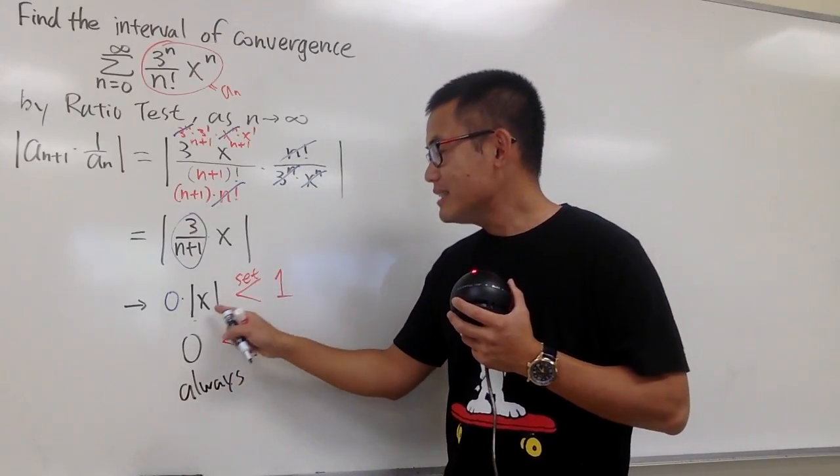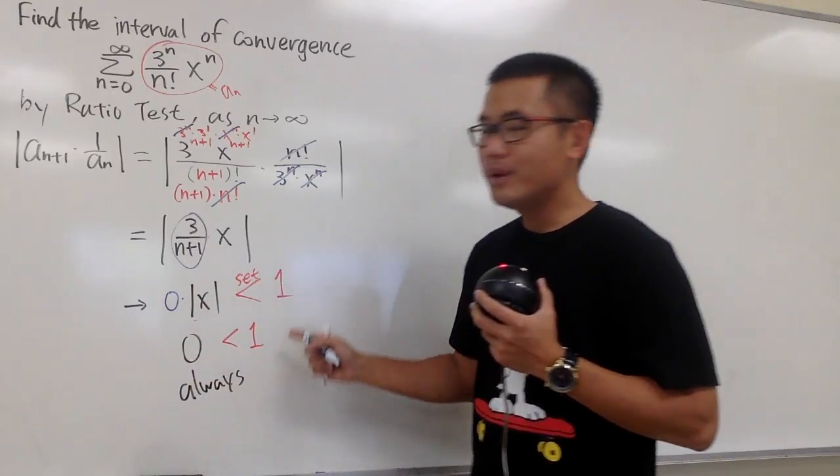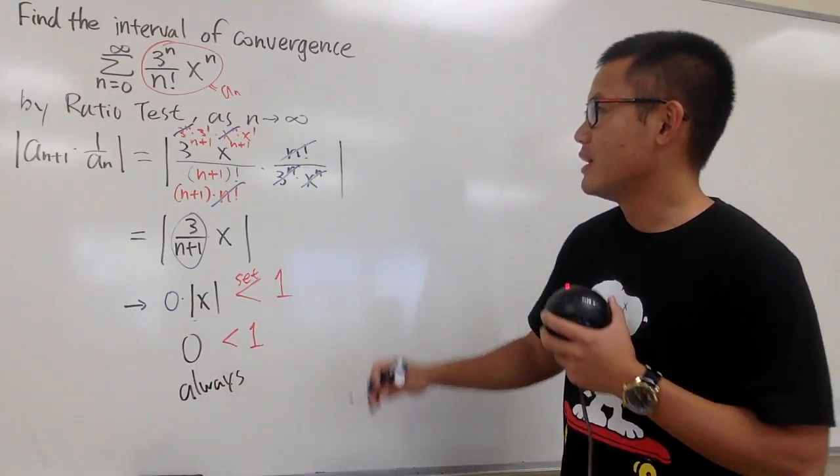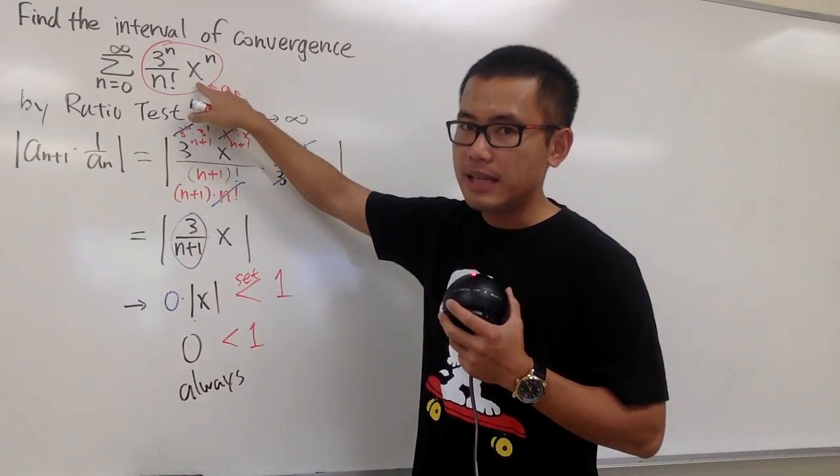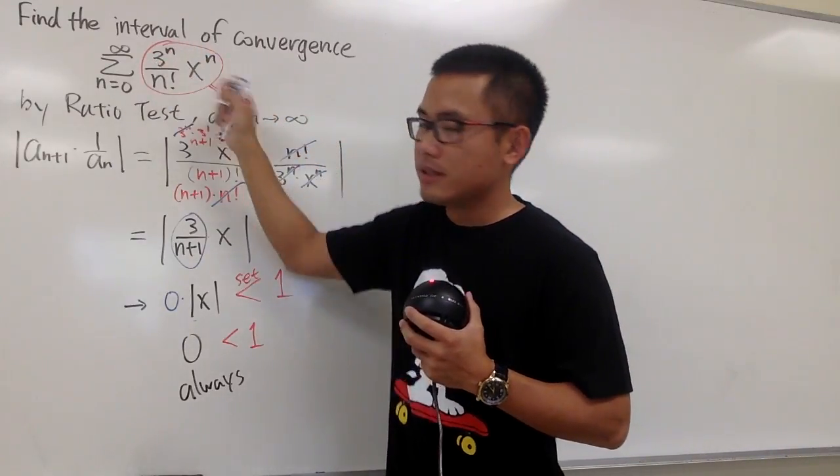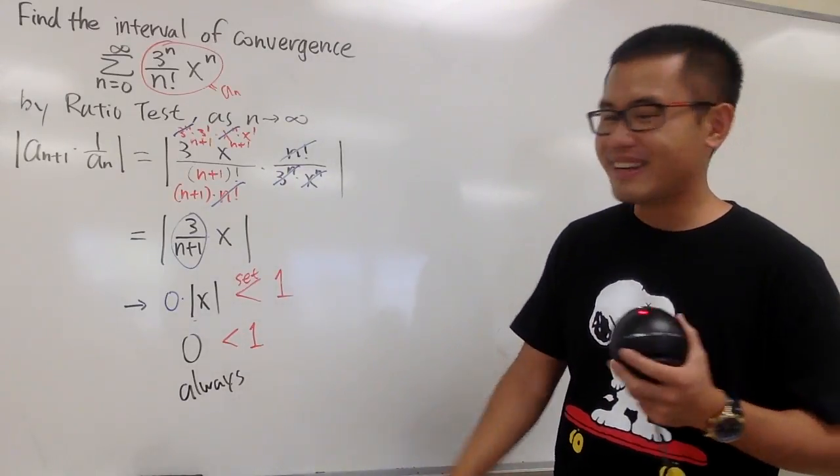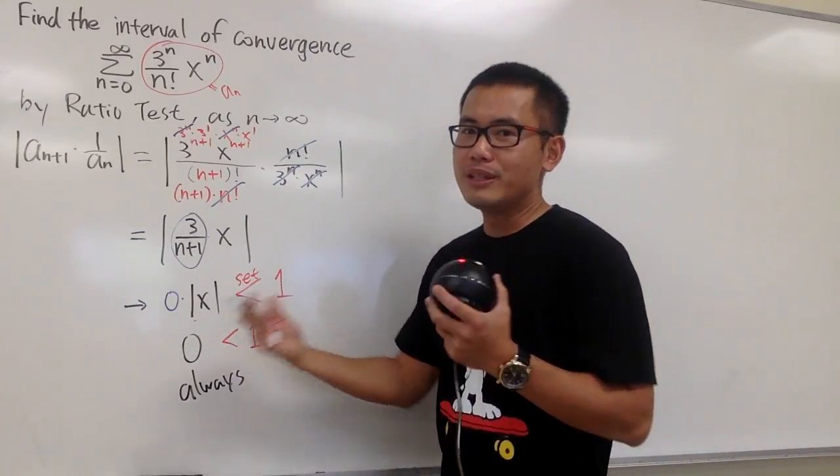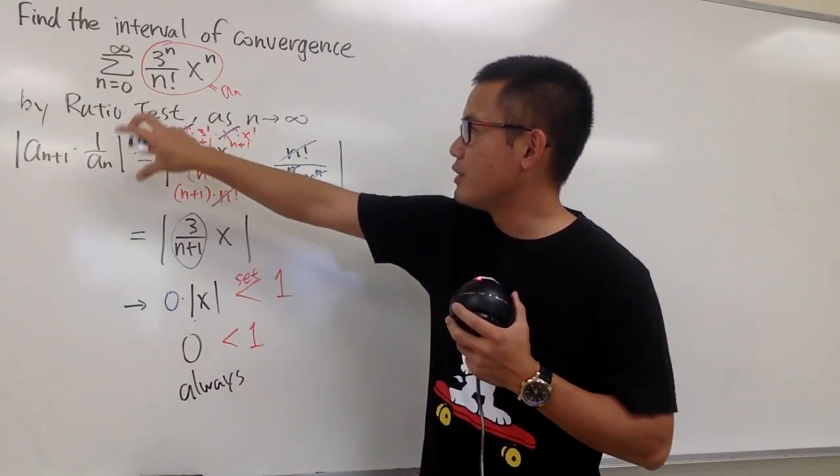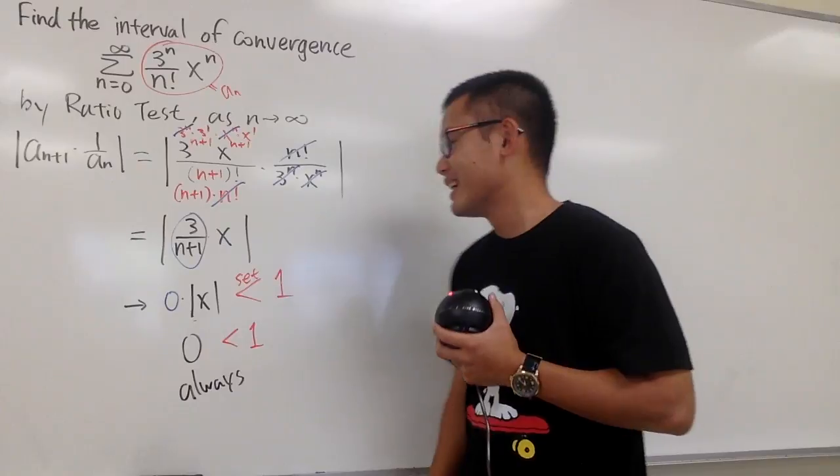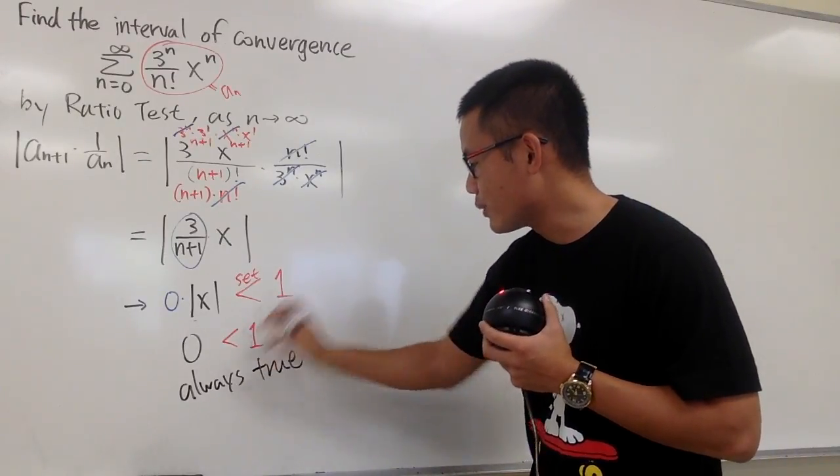With this being said, it doesn't matter what you pick for the x value, this is always going to be true. That means, it doesn't really matter what you choose for the x, you can plug into this x here, and then you end up with a series, and that series is always going to be convergent. So, this is rather a special case, because you end up with 0 for the limit after you do the ratio test, and it's always true for this inequality.